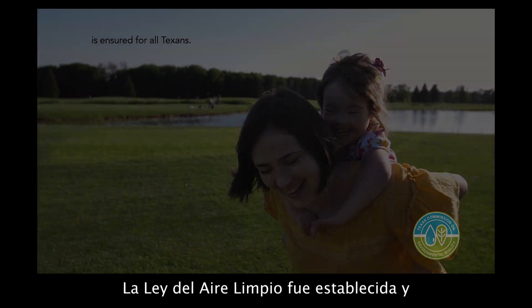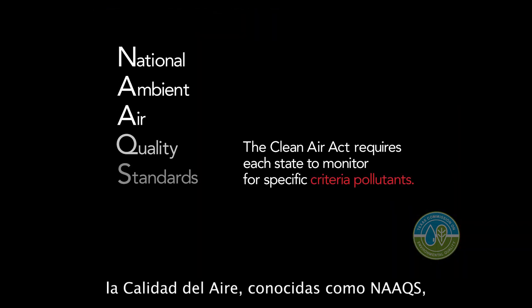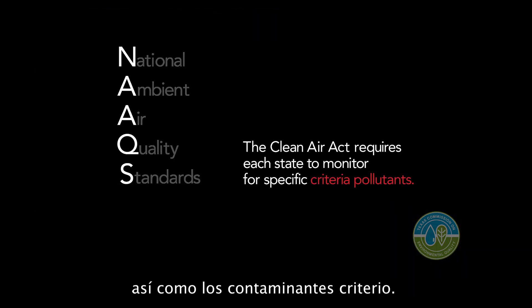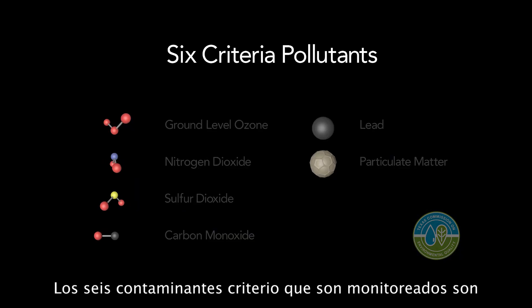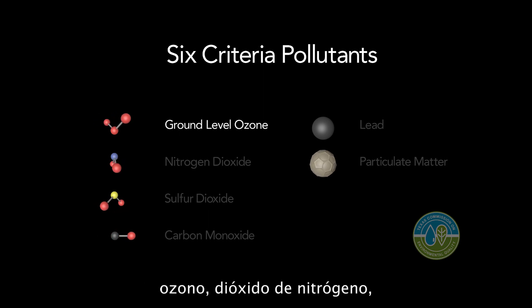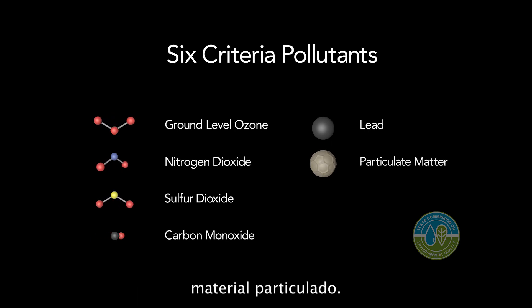The Clean Air Act was established and sets up the National Ambient Air Quality Standards, also known as the NAAQS, and criteria pollutants. Continuous air monitoring sites, otherwise known as CAMs, can be found across the state. The six criteria pollutants which are monitored include ozone, nitrogen dioxide, sulfur dioxide, carbon monoxide, lead, and particulate matter.